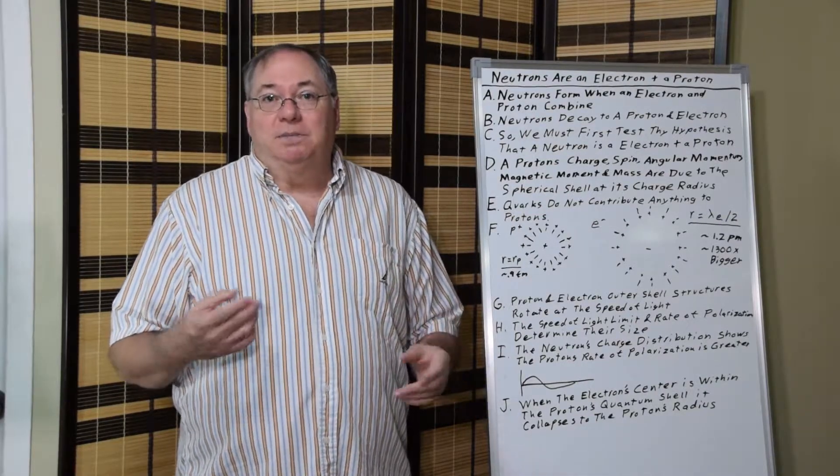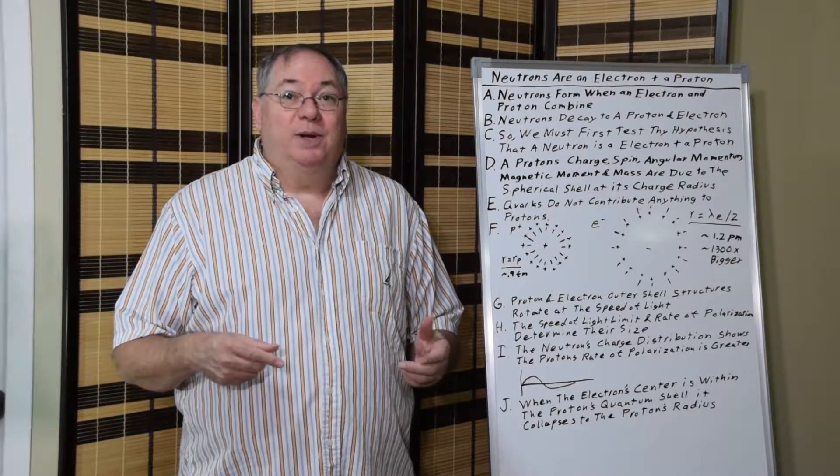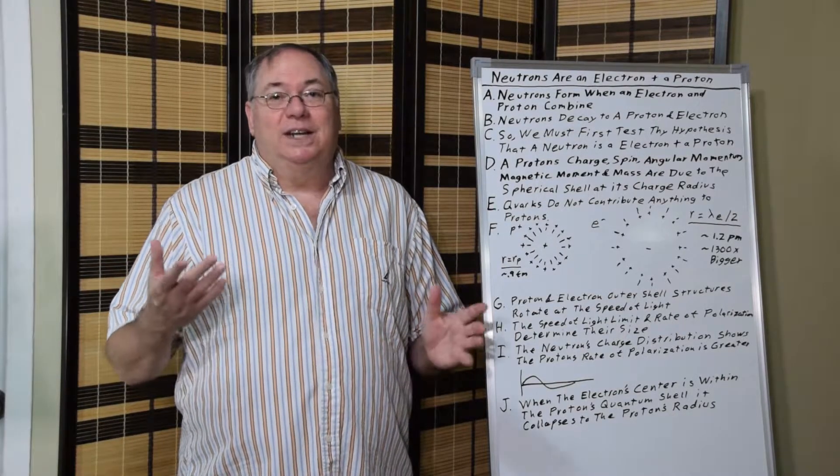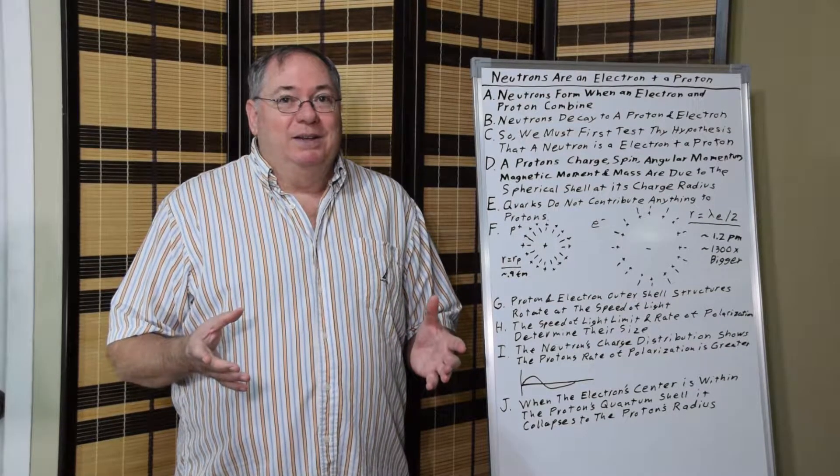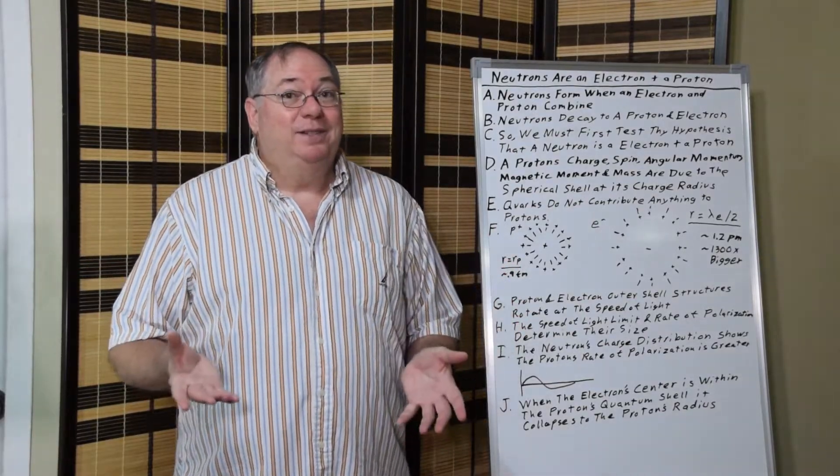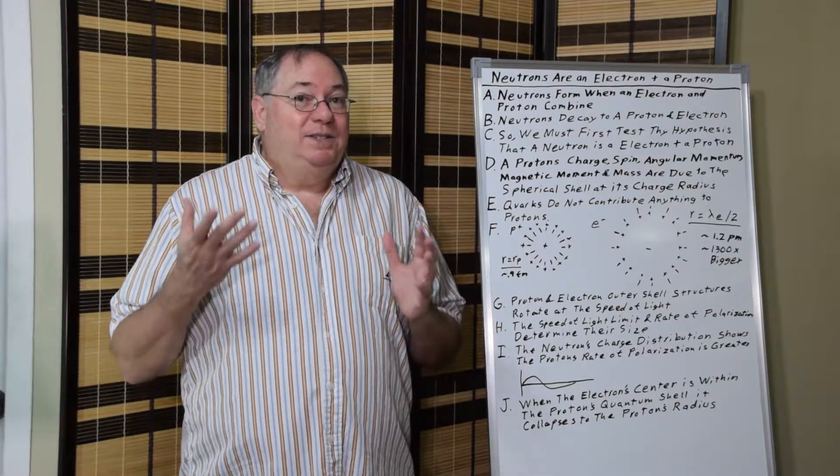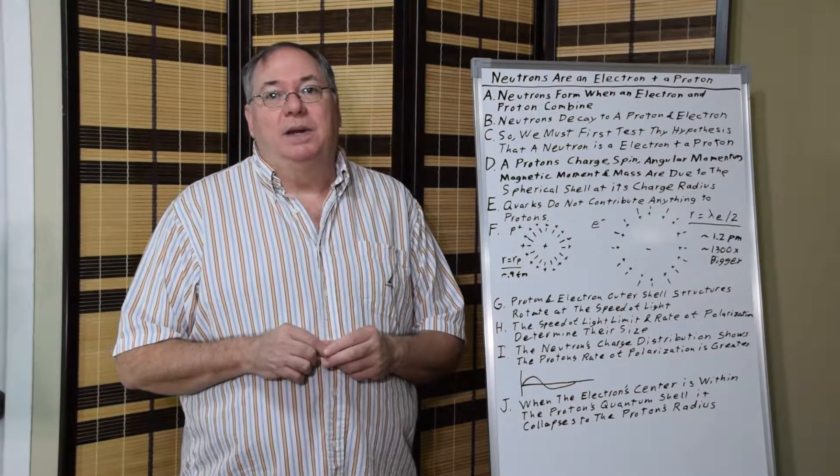Of course, protons must be made and neutrons must be made of quarks, three quarks. Of course, the first assumption should be, since we have a proton and electron, they combine and then they separate, it's a proton and an electron. That, as scientists, should be our first attempt at describing a neutron.